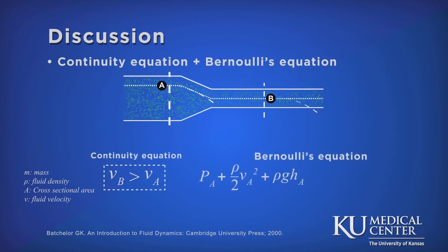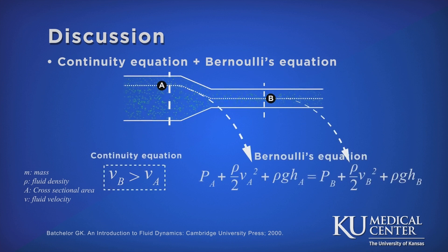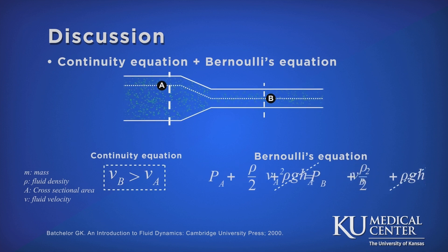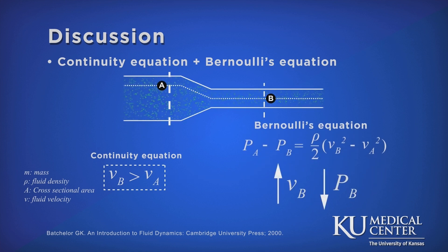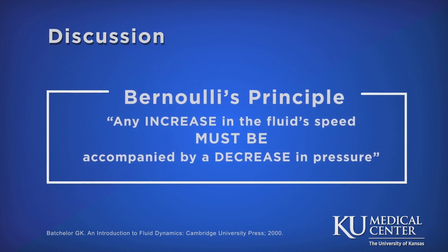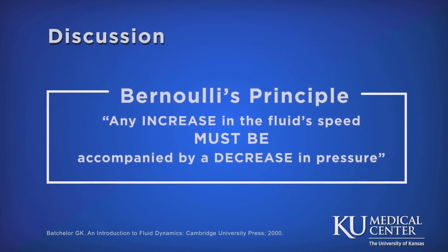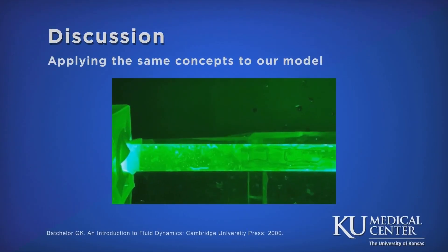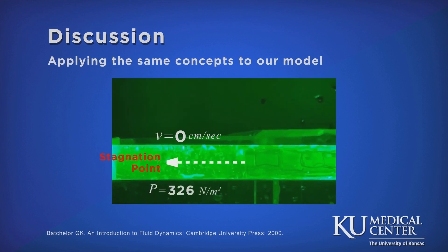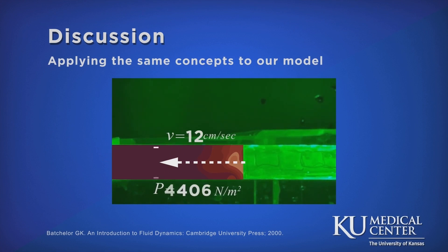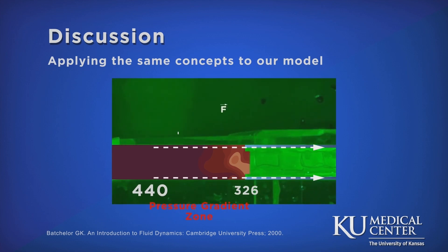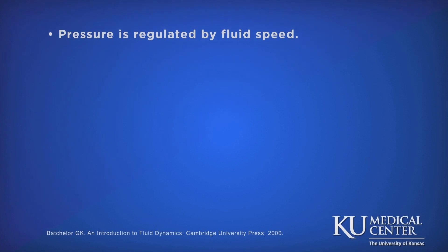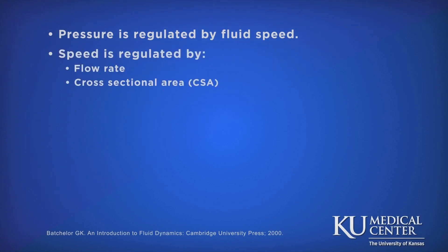Getting back to Bernoulli's equation, height between two points is not significant, so the hydrostatic pressure terms cancel each other out. Rearranging the equation and applying the continuity equation conclusion, we can say that the higher the speed, the lower the pressure at a determined point. This is Bernoulli's principle, which states that any increase in fluid speed must be accompanied by a decrease in pressure. Applying the same concepts to our model, as the fluid decelerates toward the stagnation point, the pressure increases. When re-accelerating back and regaining speed toward the annular area, the pressure decreases, generating a zone with a pressure gradient which produces the necessary force to move the stone fragment toward the nephroscope tip. Therefore, pressure is regulated by fluid speed, and speed is regulated by the flow rate and the cross-sectional area.